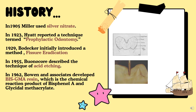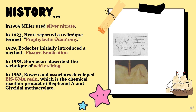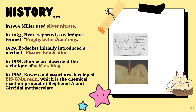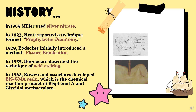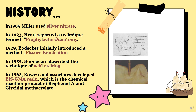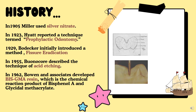Next is the history of pit and fissure sealant. In 1905, Miller used silver nitrate — this was the starting point in the evolution of pit and fissure sealant. In 1923, Hyatt introduced prophylactic odontomy. In 1929, Bodector gave fissure eradication. In 1962, Bowen and Associates introduced bis-GMA resin. Remember particularly prophylactic odontomy by Hyatt in 1923 and fissure eradication by Bodector in 1929.